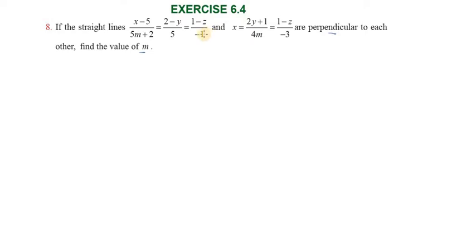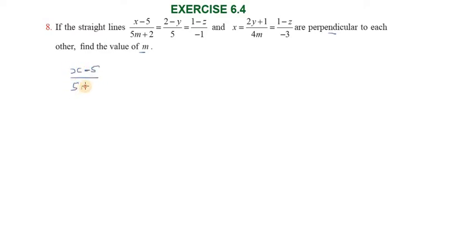For two Cartesian equations, the direction ratios can be identified directly. We need to rearrange the equations into standard Cartesian format: x minus something, y minus something, z minus something. After rearranging, the first line gives us x minus 5, divided by 5m plus 2.